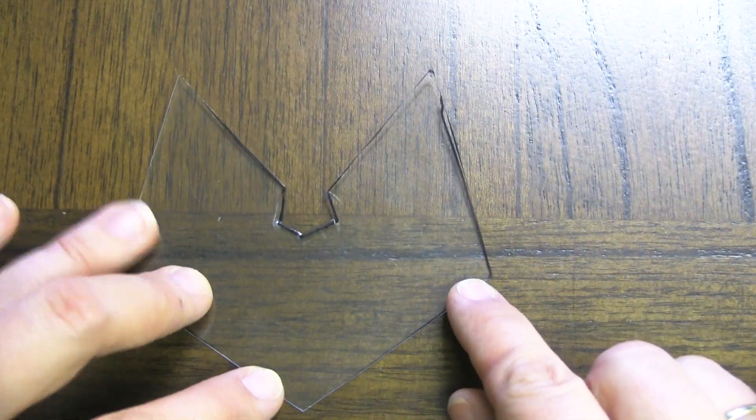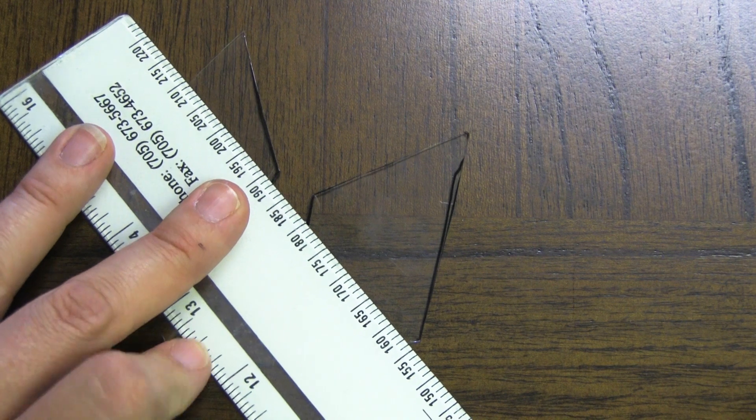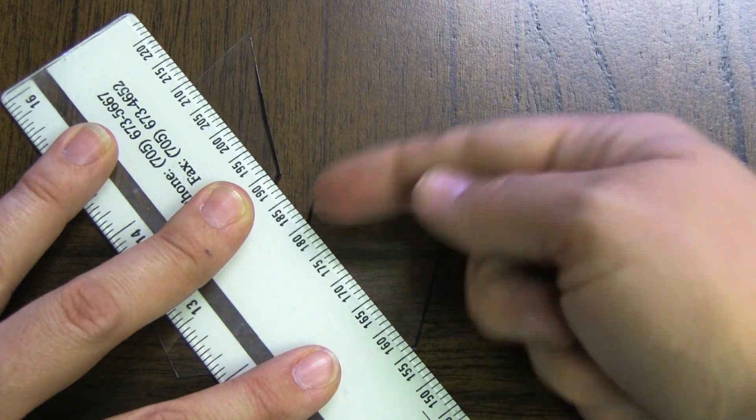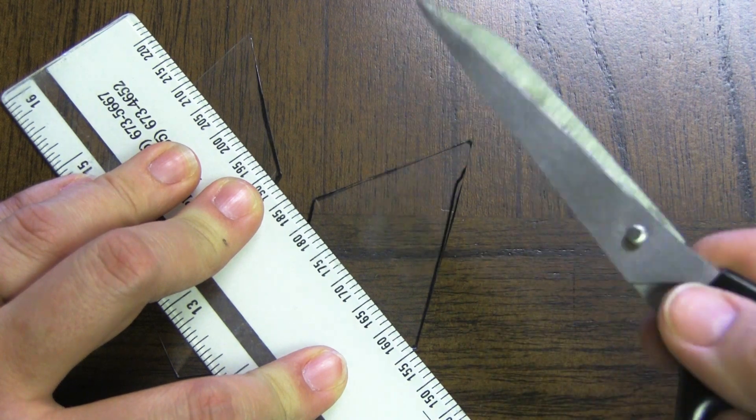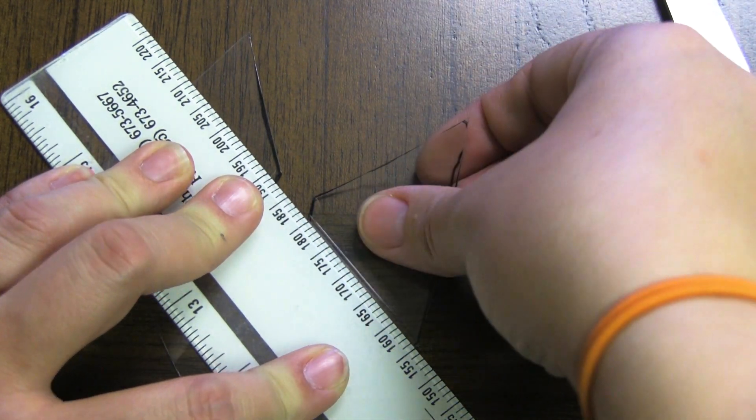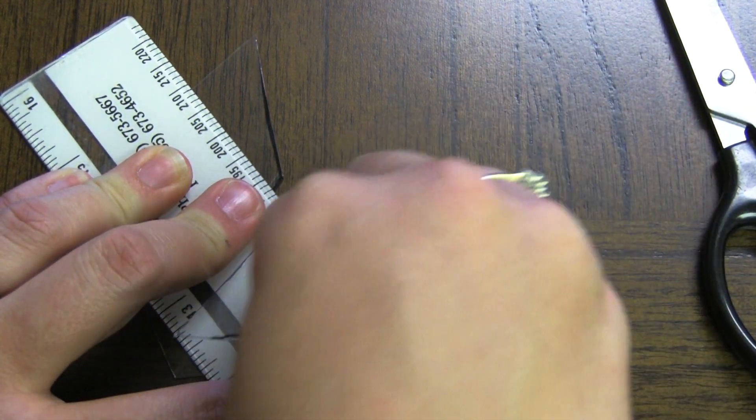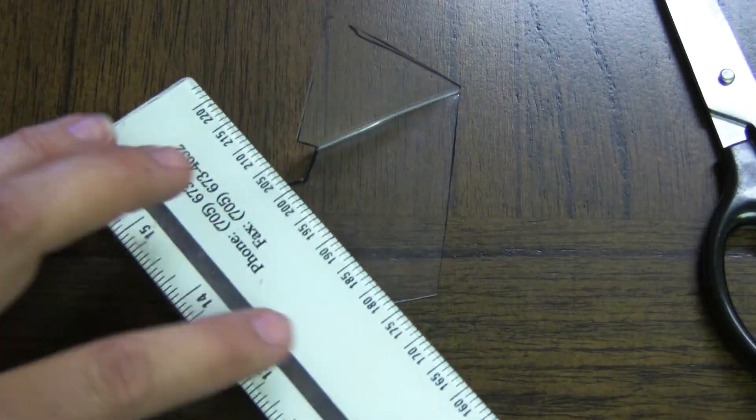Okay, so now what you're going to do is use a ruler to fold the plastic back at each point. Here and here. If the plastic is thick, you can use a pair of scissors to score a line first and it should bend back a lot easier. Do the same thing for the other two points as well.